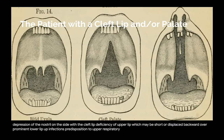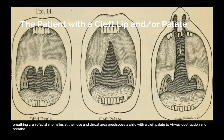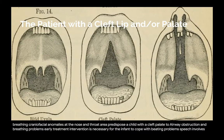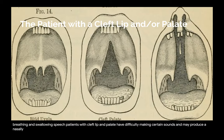Predisposition to upper respiratory and middle ear infections is common. Craniofacial anomalies of the nose and throat area predispose the child with a cleft palate to airway obstruction and breathing problems. Early treatment intervention is necessary for the infant to cope with breathing problems. Speech involves breathing and swallowing. Patients with cleft lip and/or palate have difficulty making certain sounds and may produce a nasal tone. Anatomic structure, airway and breathing problems, and hearing difficulties all contribute to speech problems.